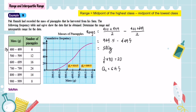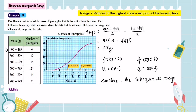We also need to find the third quartile. The position of the third quartile is 3 over 4 times the total frequency — 3 over 4 times 80 equals 60. From the graph at 60, you find the value from the horizontal axis, which is 809.5. Therefore, the interquartile range equals the third quartile minus the first quartile, which is 809.5 minus 614.5.